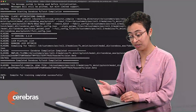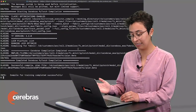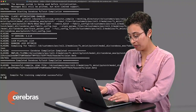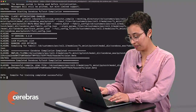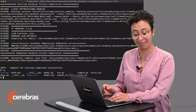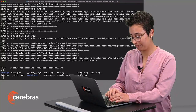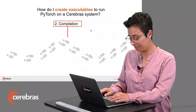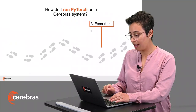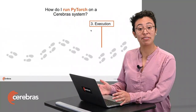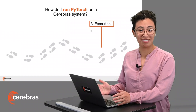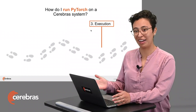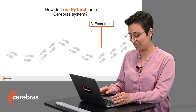Now that our compilation is completed, we will find all of the compilation artifacts in the model directory. Once we have compiled, we are ready to execute — meaning we are going to run PyTorch on the Cerebras system.